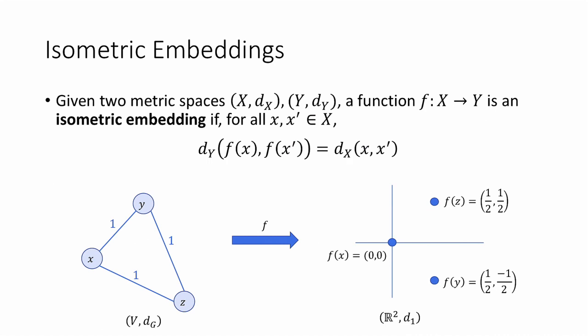And we can check that under this mapping, the distances between all the points are exactly preserved. For example, the distance in the L₁ metric between f(x) and f(y) is 1/2 + 1/2, which is 1. And that's exactly the same as the distance in our original metric between x and y.